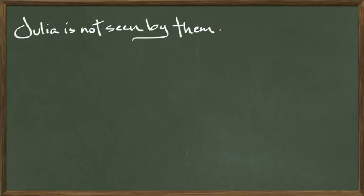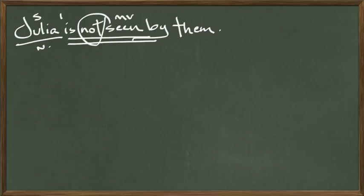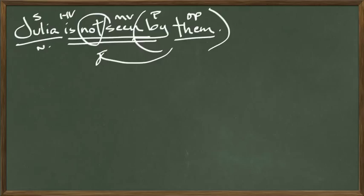Another example: 'Julia is not seen by them.' In the story, Julia runs off into a garden to pick flowers and her brothers are calling her but can't see her. Julia is the subject in the nominative case. Seen is the main verb; 'is' is a helping verb; 'not' is an adverb. She is not seen by whom? By them — object of the preposition, ablative of agent, so they're in the ablative case.